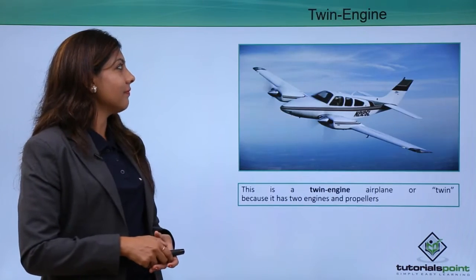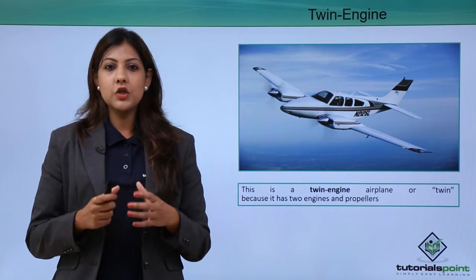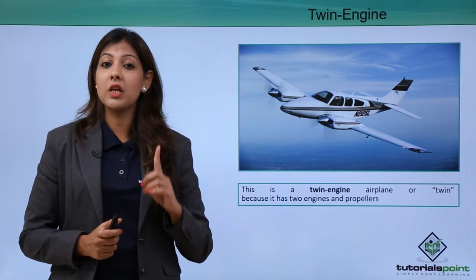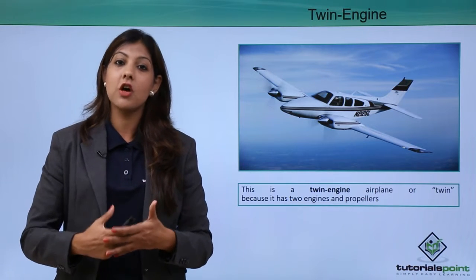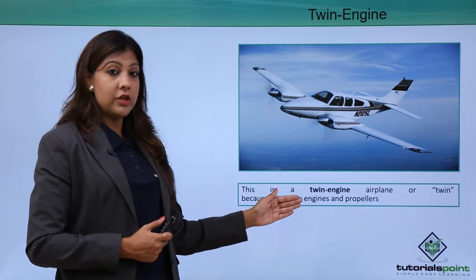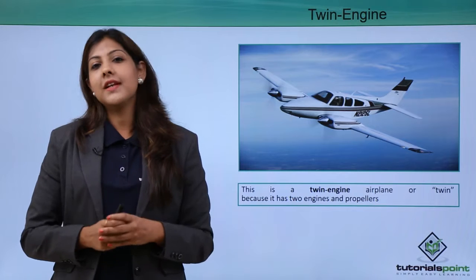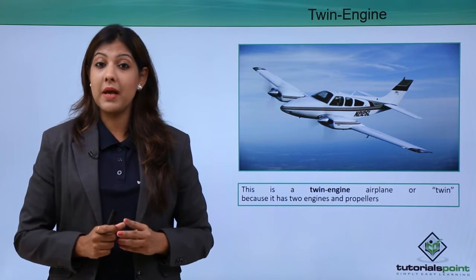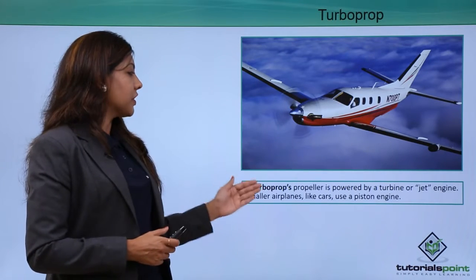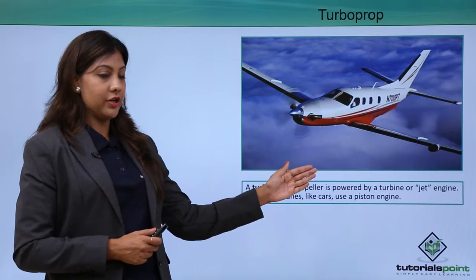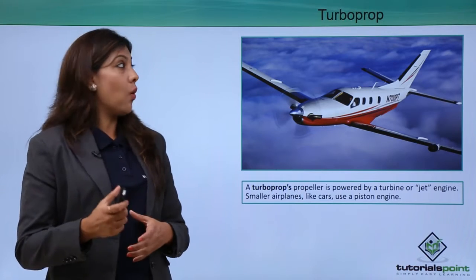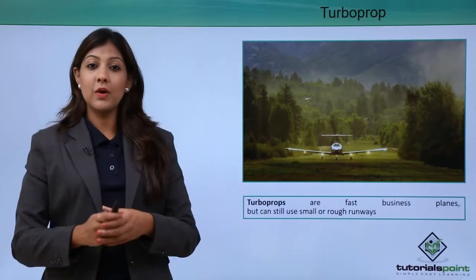Twin engine aircraft are designed to go longer distances, so having a dual engine is important to carry the aircraft further. A twin engine airplane has two engines and two propellers — whenever there are two engines, there must be two propellers. A turbo prop's propeller is powered by a turbine or jet engine, while smaller airplanes use a piston engine.